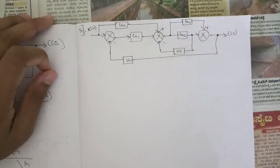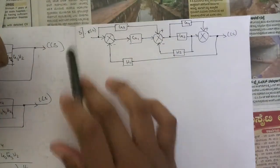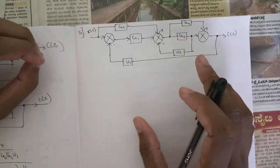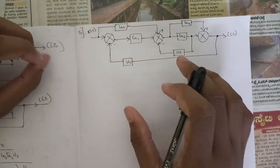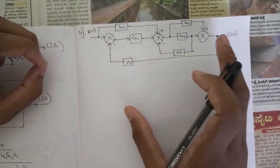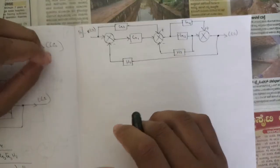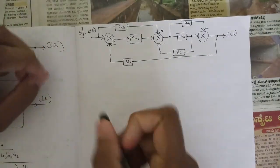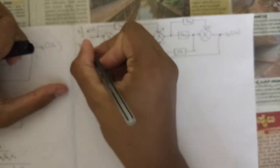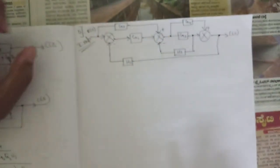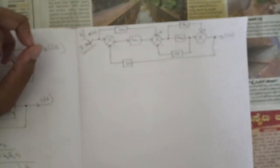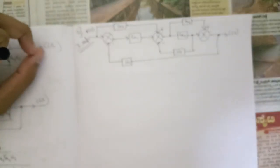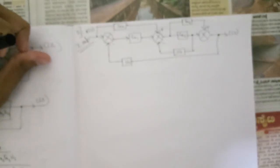Without wasting any time, let's continue with our problems. This is one more kind of block diagram — it looks a bit simple but this is a very tough one. This block diagram is a multiple-times repeated question; it has appeared multiple times in previous exams, so you can note this as an important question. The goal remains the same: reduce the block diagram and find the transfer function.